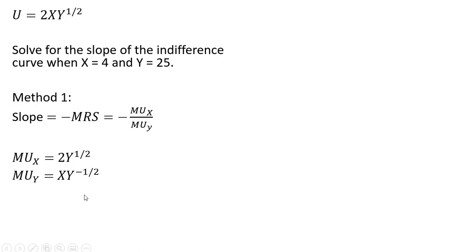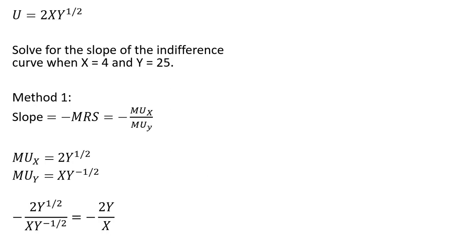Plugging this into our slope formula — minus the marginal utility of good x in the numerator, marginal utility of good y in the denominator — this simplifies very nicely to minus 2y divided by x. We can take y to the minus one-half and move it into the numerator, and we'll have y to the one-half times y to the one-half in the numerator, which is just y.